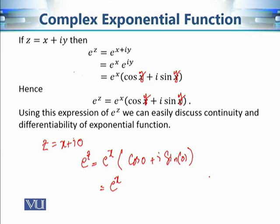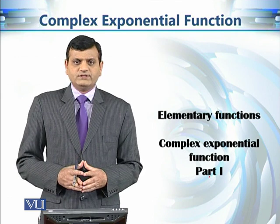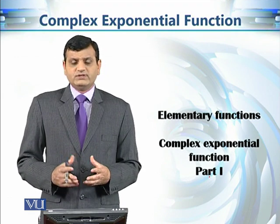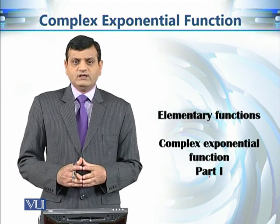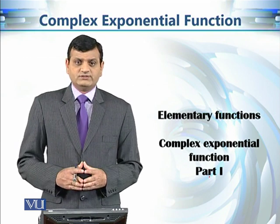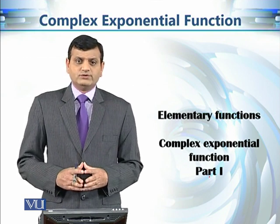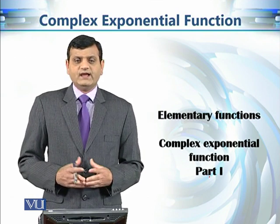This confirms that the first criterion is satisfied. The basic properties of the exponential function carry over to the complex exponential function. The Cartesian form e^z = e^x(cosy + i·siny) is also useful for checking continuity and differentiability. In the next module we will continue studying the complex exponential function and its further properties.